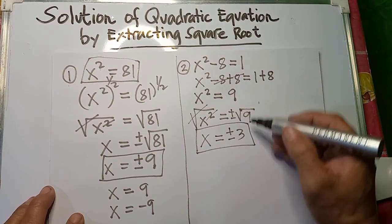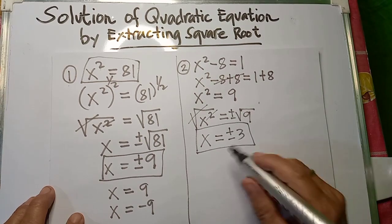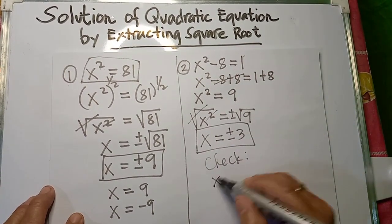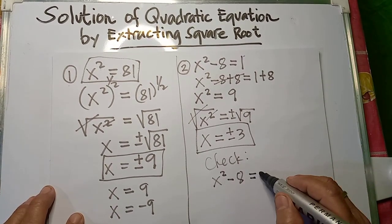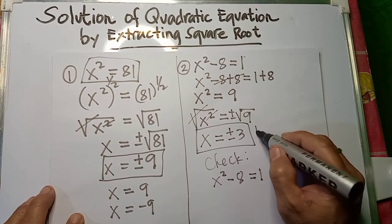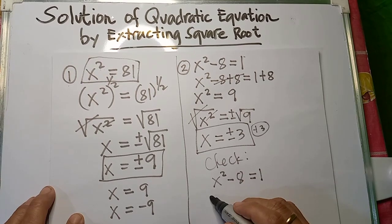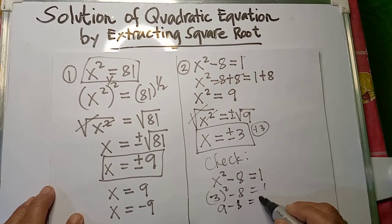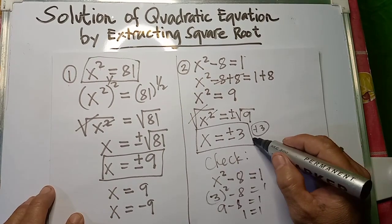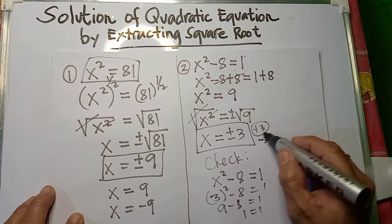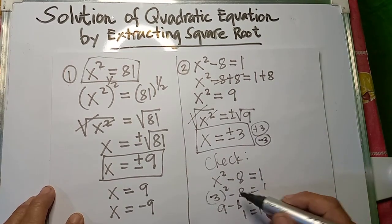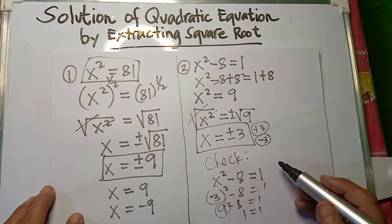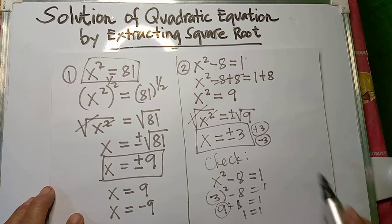So these two values can satisfy the given original equation. We can check this based on our original equation: x squared minus 8 is equal to 1. Substituting the first value, positive 3: 3 squared minus 8 equals 9 minus 8 equals 1, and 1 is equal to 1 — correct. Checking the other value, negative 3: negative 3 times negative 3 is positive 9, so 9 minus 8 equals 1 — also correct.